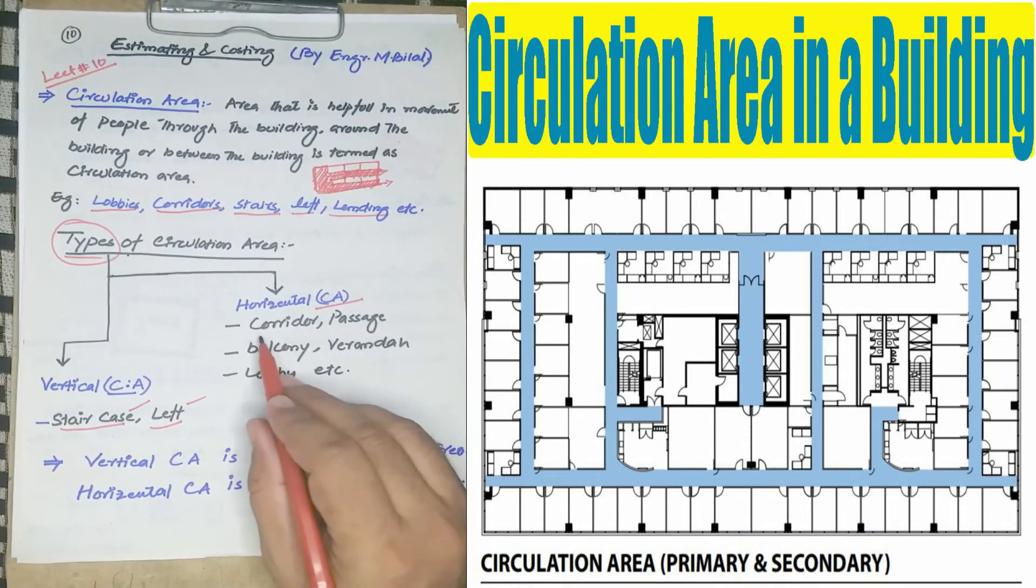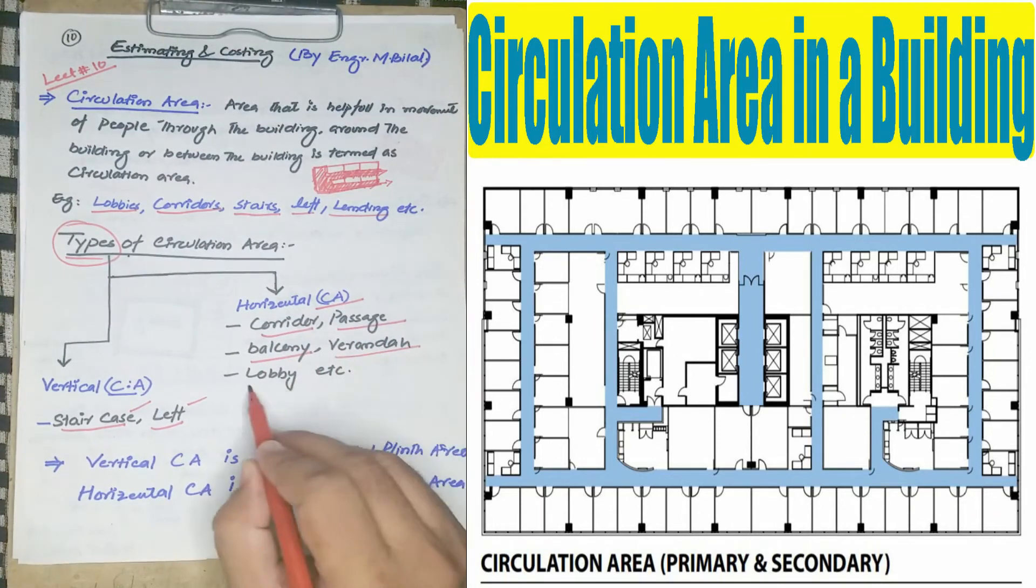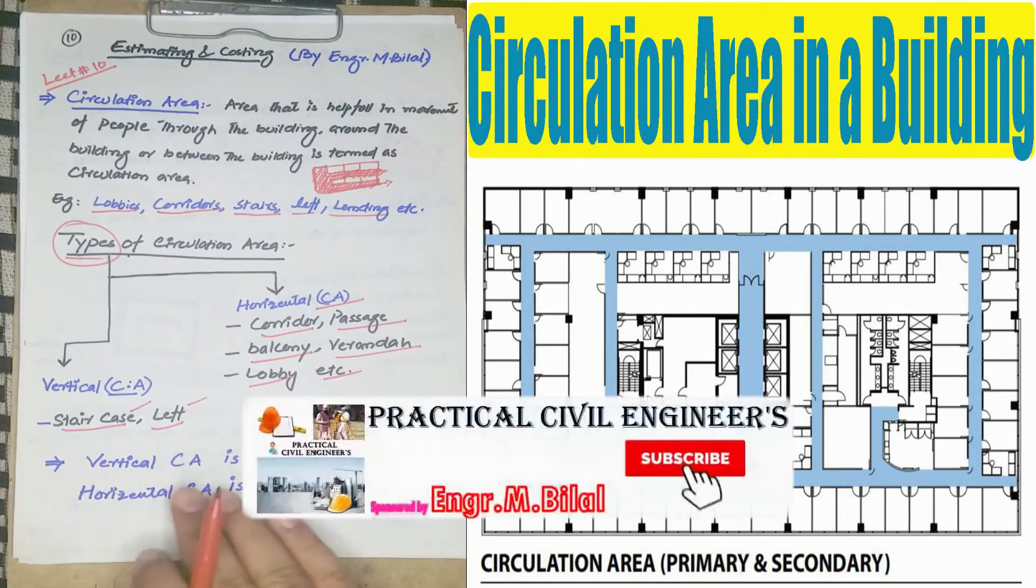The vertical circulation areas are corridor, passage, balcony, veranda, lobby, etc.